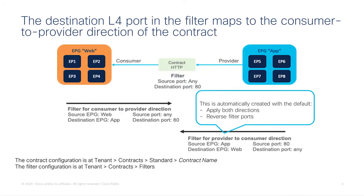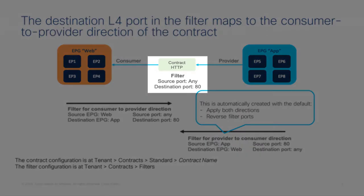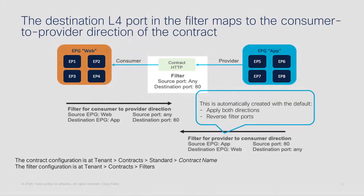Based on that direction, you need to define filters. When you define a filter in the filter rules, you have the concept of source and destination layer 4 ports. Source refers to the consumer side and destination refers to the provider side. So when you configure a contract, you define a filter — for instance with source and destination port 80 — and that is the correct filter if the provider is providing port 80.